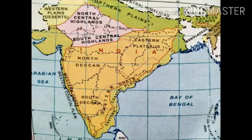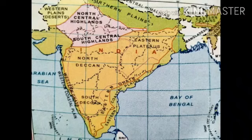Let's discuss the central highlands. The central highlands lie above the river Narmada. The central highlands include the Malwa Plateau to the north-west and the Chotanagpur Plateau in the north-east. So the central highlands include two plateaus: the Malwa Plateau and the Chotanagpur Plateau.